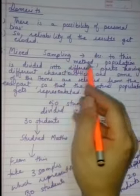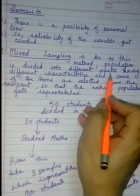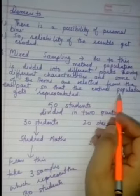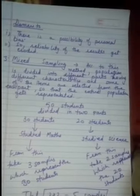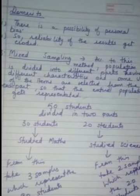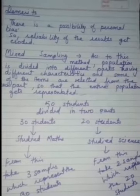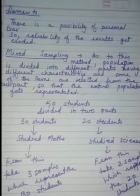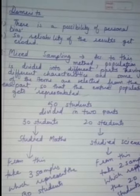Third method: mixed sampling method, also called stratified sampling. According to this method, the population is divided into different parts having different characteristics, and some items are selected from each part so that the entire population gets represented.